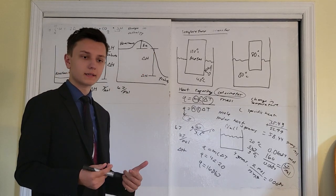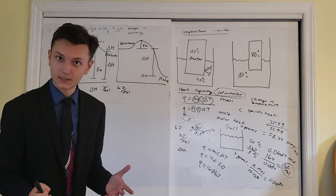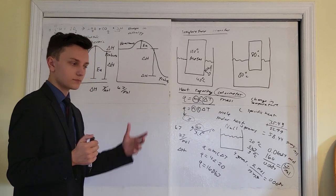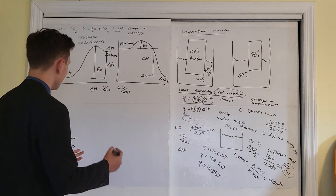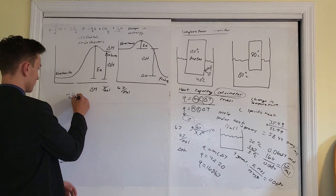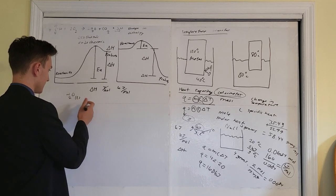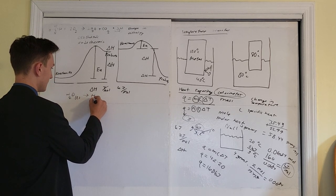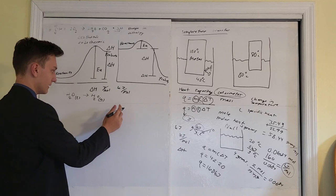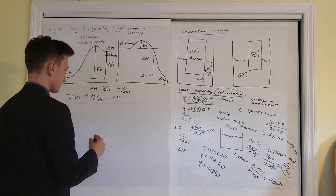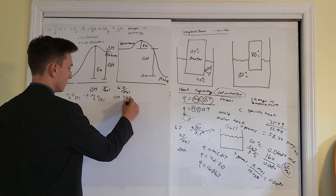Our next topic is phase changes — a topic many students get wrong. When you take water and want to boil it into a gas, you need to add heat. For example: H2O(l) → H2O(g), with a delta H of +4 kJ/mol.